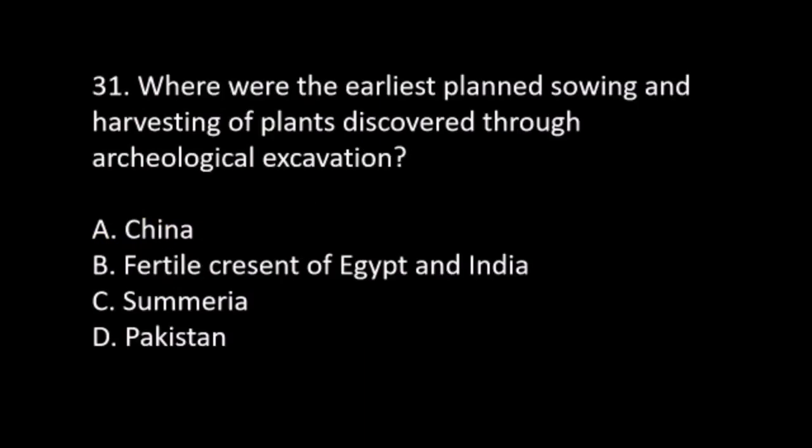Number 31. Where were the earliest planned sowing and harvesting of plants discovered through archaeological excavation? A. China. B. Fertile Crescent of Egypt and India. C. Sumeria. D. Pakistan. The answer is B. Fertile Crescent of Egypt and India.